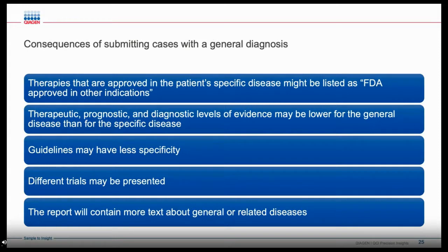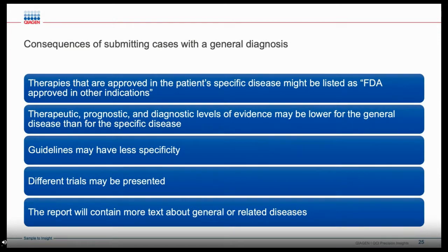In some situations, a general diagnosis is appropriate. There are times that an oncologist or pathologist is unable to determine a specific diagnosis — for example, a metastasis may be detected without identification of the original primary tumor, pathology results may be unavailable or inconclusive, a case may be so urgent that interpretation is required in advance of a specific diagnosis, or the molecular results may be needed to confirm or refine a diagnosis. When a specific diagnosis cannot be obtained, the case may be submitted with a more general term, though there are tradeoffs: levels of evidence may be lower, guidelines and trials may be less specific, and the report will be longer to cover more possibilities.